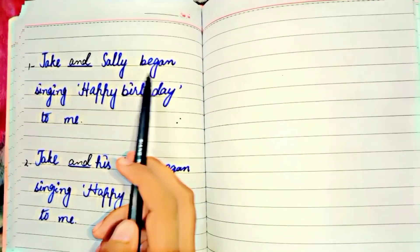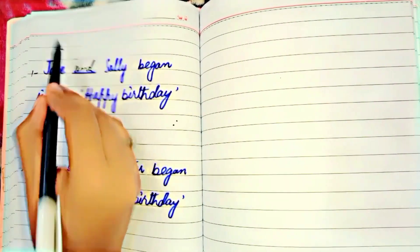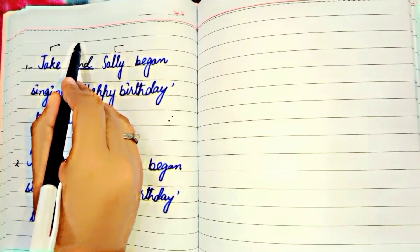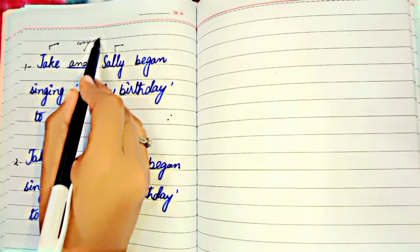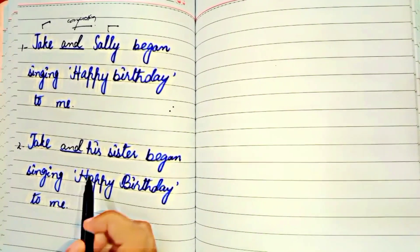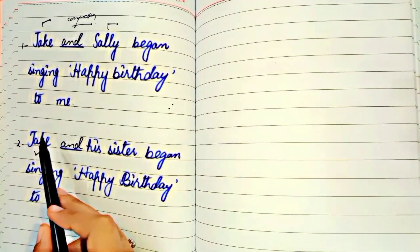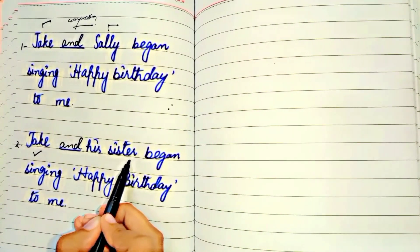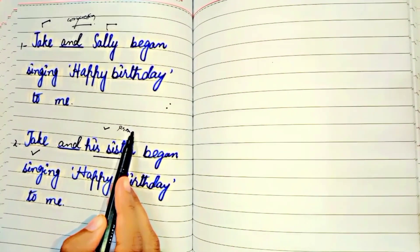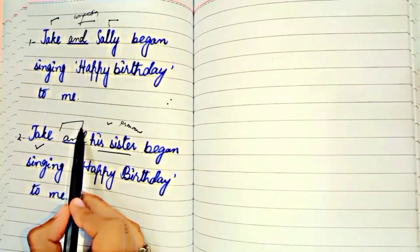'Jack and Sally began singing Happy Birthday to me.' Here we have two separate nouns — Jack and Sally — both are proper nouns, joined with the coordinating conjunction 'and'. Another example: 'Jack and his sister began singing Happy Birthday to me.' Here 'Jack' is a proper noun and 'his sister' uses a pronoun, joined by the coordinating conjunction 'and'.